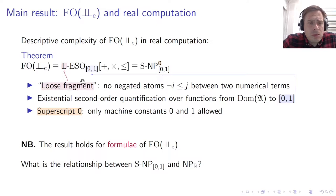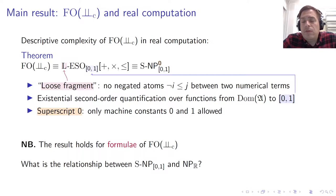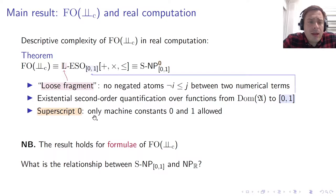We define a complexity class analogously to NPR but restricted: certificates must be strings of real numbers between 0 and 1, and SPS machines are used instead of BSS machines. The corresponding fragment of ESOR disallows negated atoms between numerical terms, requires existential second-order quantification to range over functions from the domain to the interval [0,1], and allows only machine constants 0 and 1.